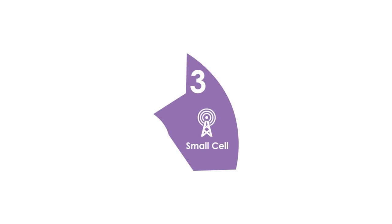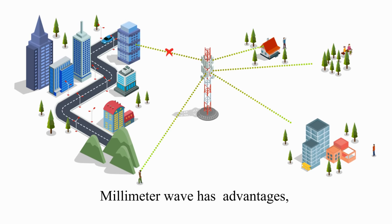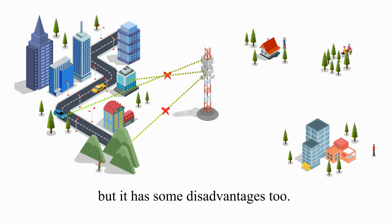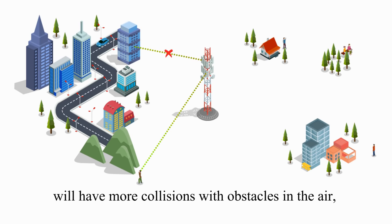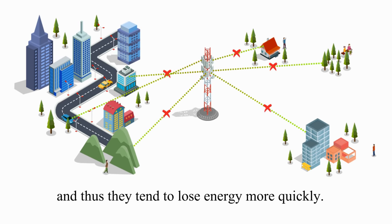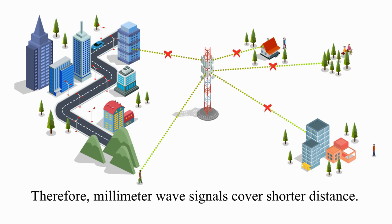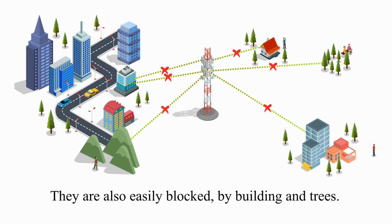The third technology is also related to millimeter wave. Millimeter wave has advantages, but it also has some disadvantages. For example, higher frequency signals will have more collisions with obstacles in the air, and thus they tend to lose energy more quickly. Therefore, millimeter wave signals cover shorter distances and are easily blocked by buildings or trees.